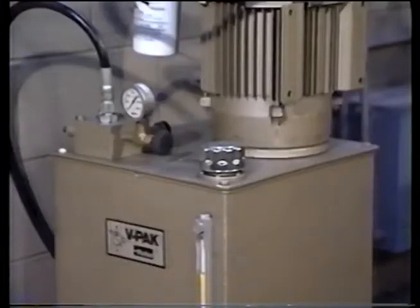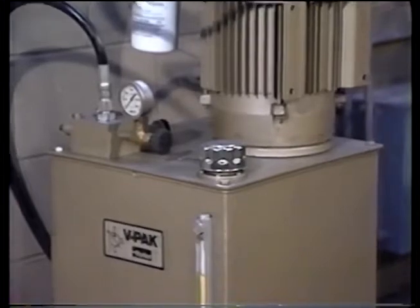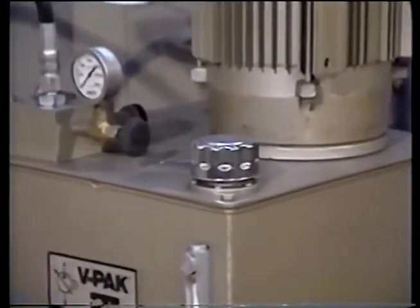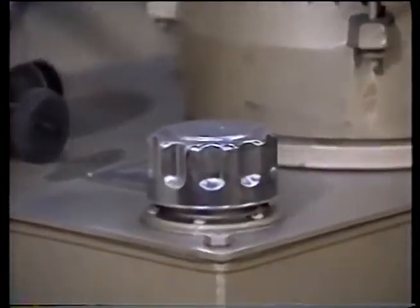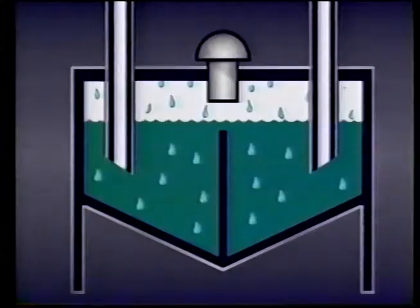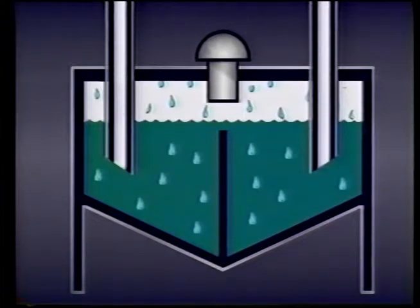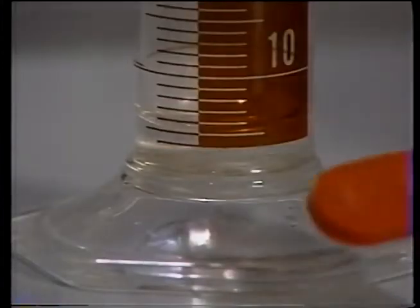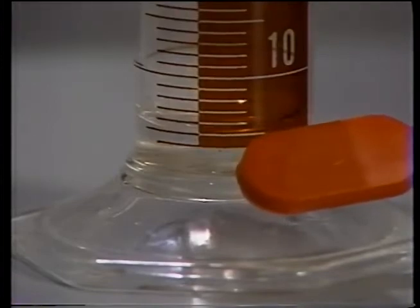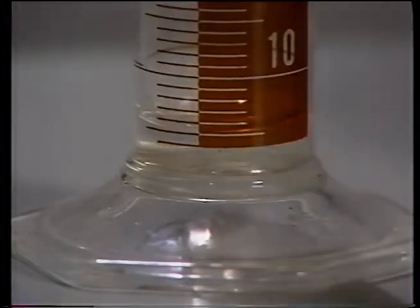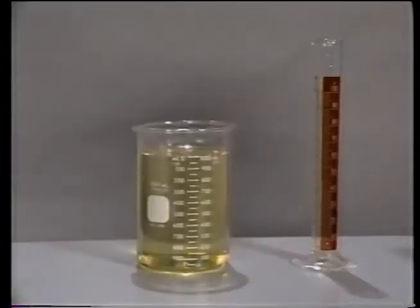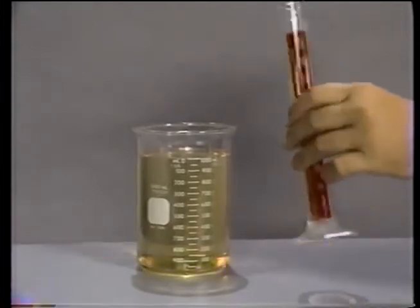Rust is usually formed when water condenses on exposed metal surfaces. Moisture-laden air is constantly drawn into the reservoir through the breather cap. When the system cools down, water vapor condenses out on the reservoir walls and eventually makes its way into the fluid. Even small amounts of water in petroleum-based hydraulic fluids — less than half of one percent — can start to rust the system.